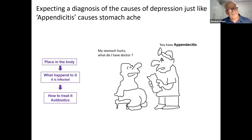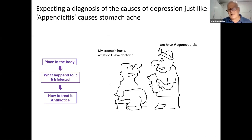If we compare it to other fields of medicine — for example, you go to a physician with stomachache. You say, 'Doctor, I have stomachache. What do I have?' You expect some kind of diagnostic process at the end of which you get a diagnosis, for example, appendicitis. Appendicitis: the appendix is a place in the body and it is infected. So the name of the illness is the cause of the illness — it's an etiological diagnostic entity.